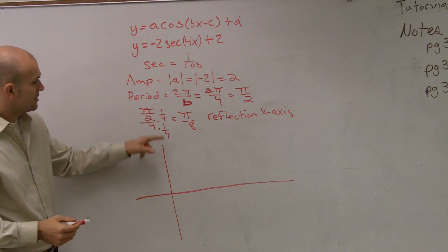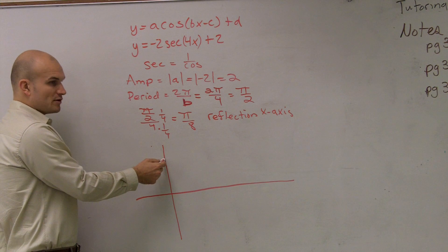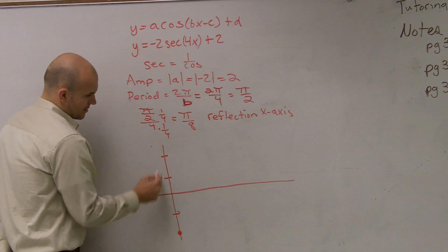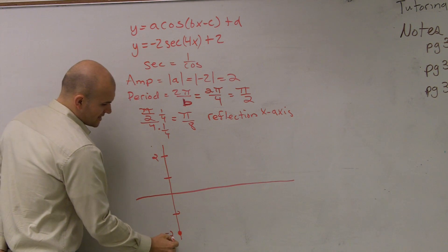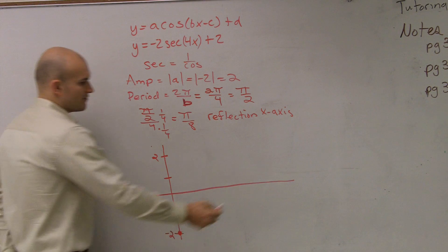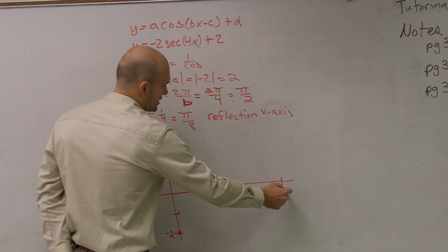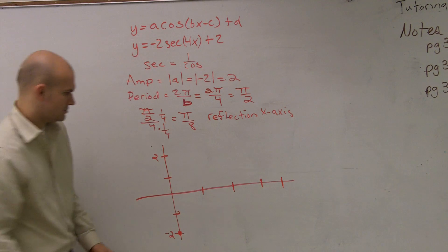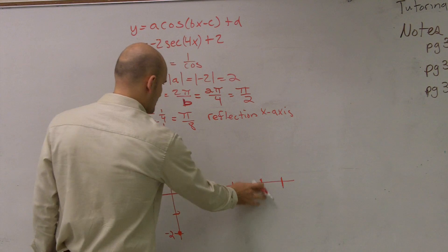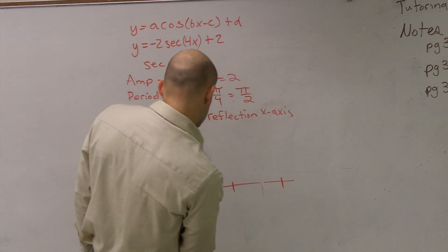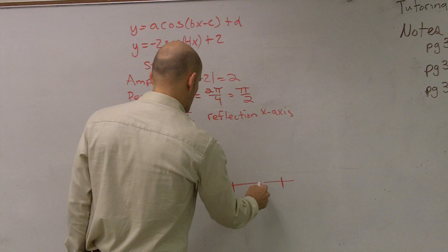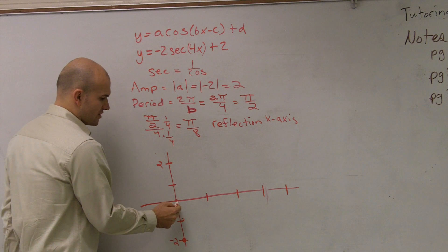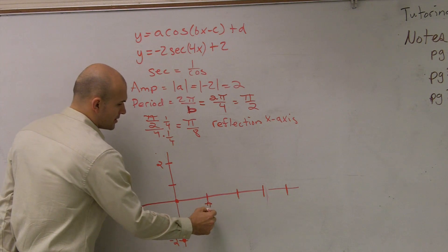All right, so we got a reflection. We got an amplitude of 2. We have a period of π over 2, and the distance between our four important points of one period is π over 8. Now this is a cosine graph, and the parent graph always started up here, but since it's a reflection, let's just start it down here. So that's at positive 2, that's at negative 2.